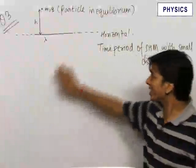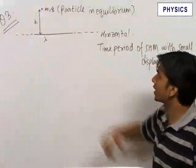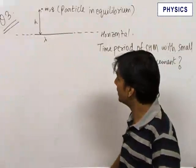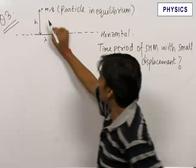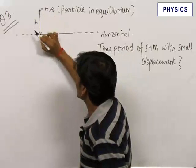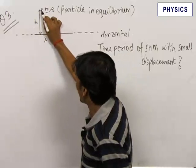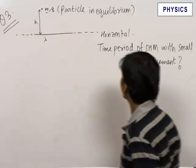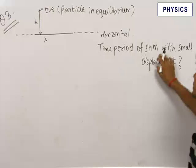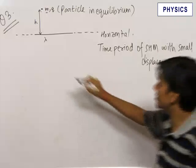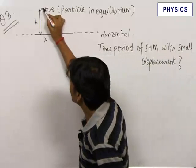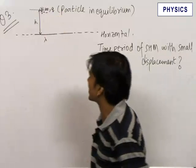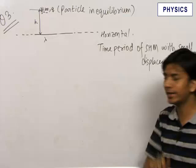The third question is an interesting combination of SHM and electrostatics. We have an infinite wire of linear charge density lambda, and a particle of mass m and charge q which is in equilibrium at a certain point. We need to find out the time period of SHM for small displacements x from this equilibrium position.